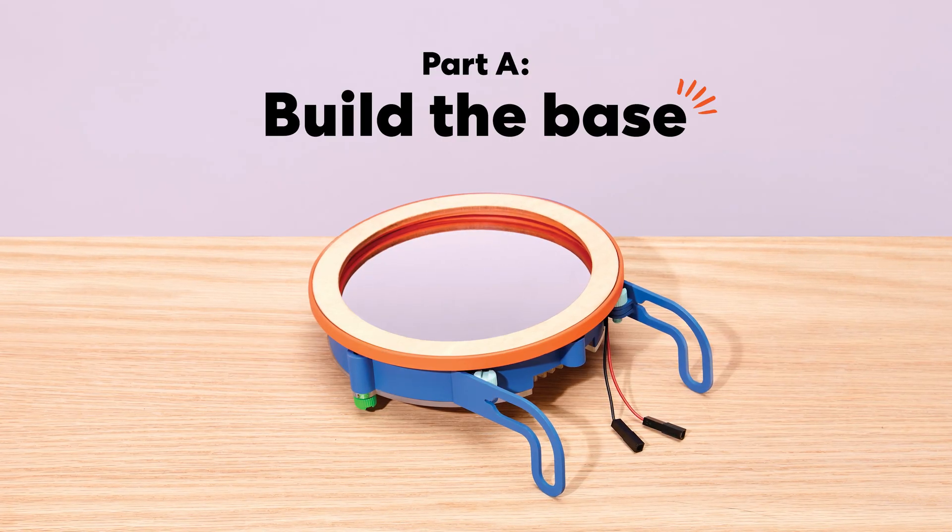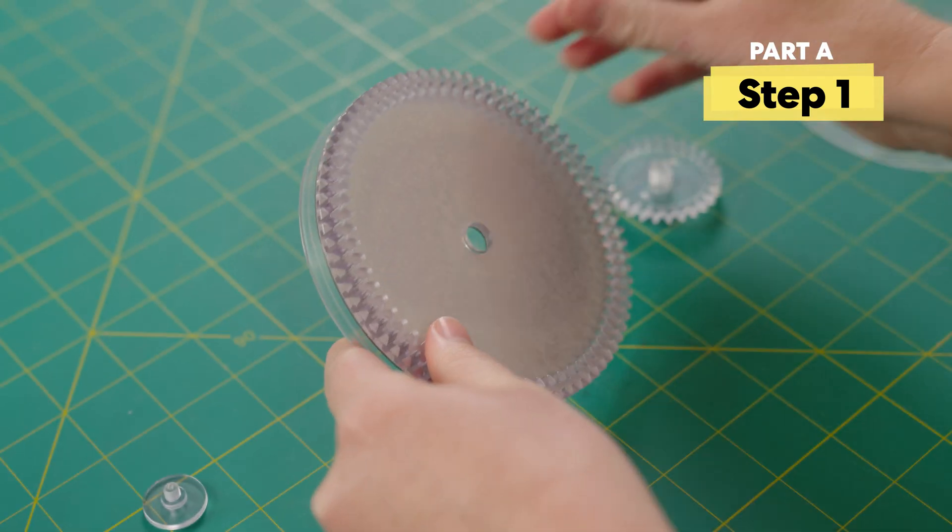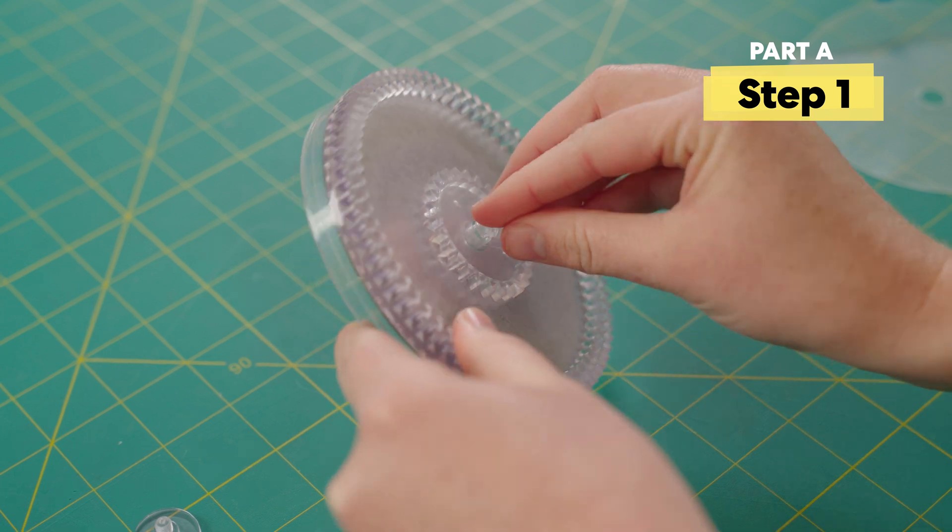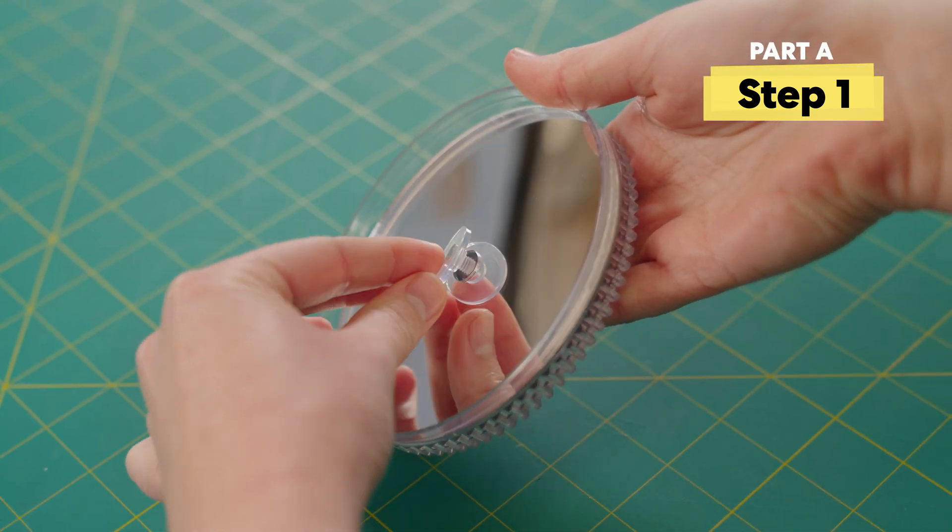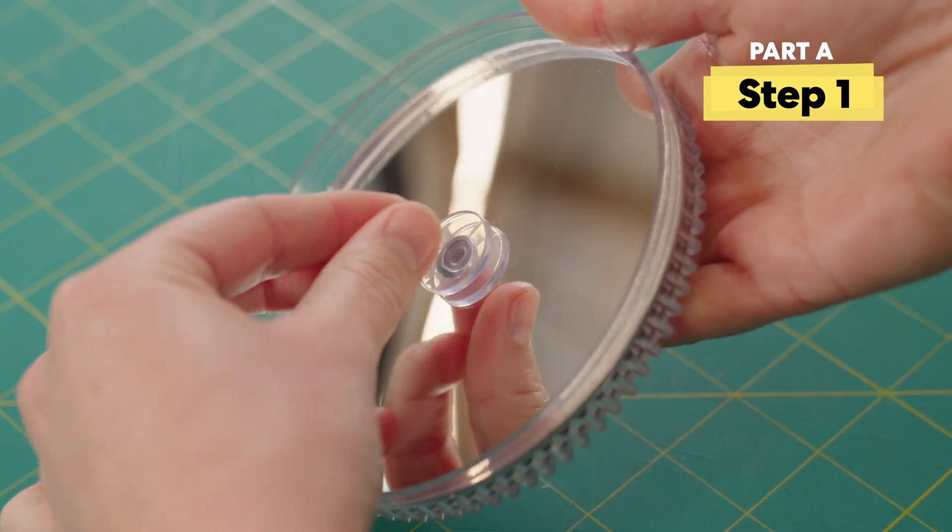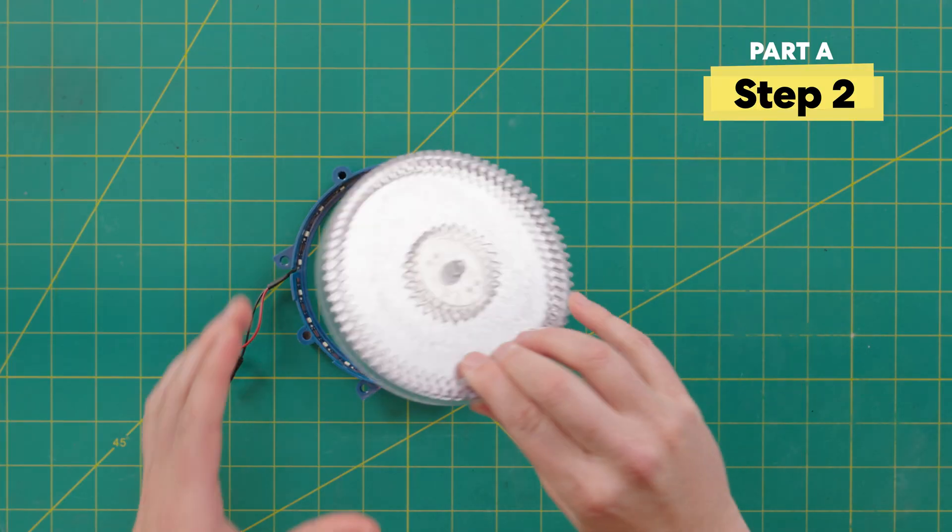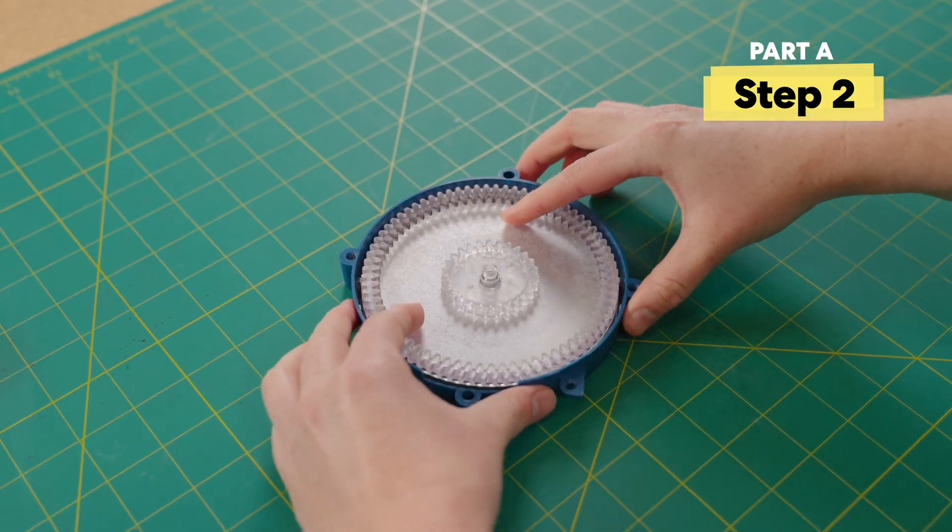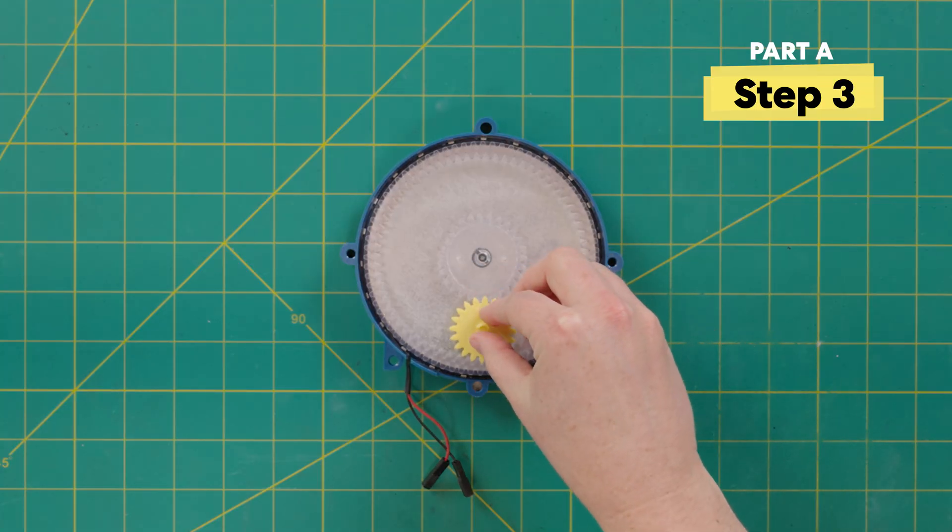Let's start by assembling the mirror. First, peel off the film from your mirror. Now flip it over, place on the gear, and the screw. It's okay if it's a little wiggly for now. Now place the piece into the center ring.